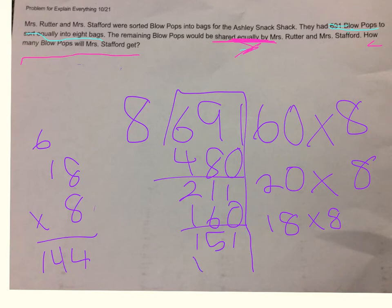So 151 minus 144 equals 7. And then that would be a remainder.